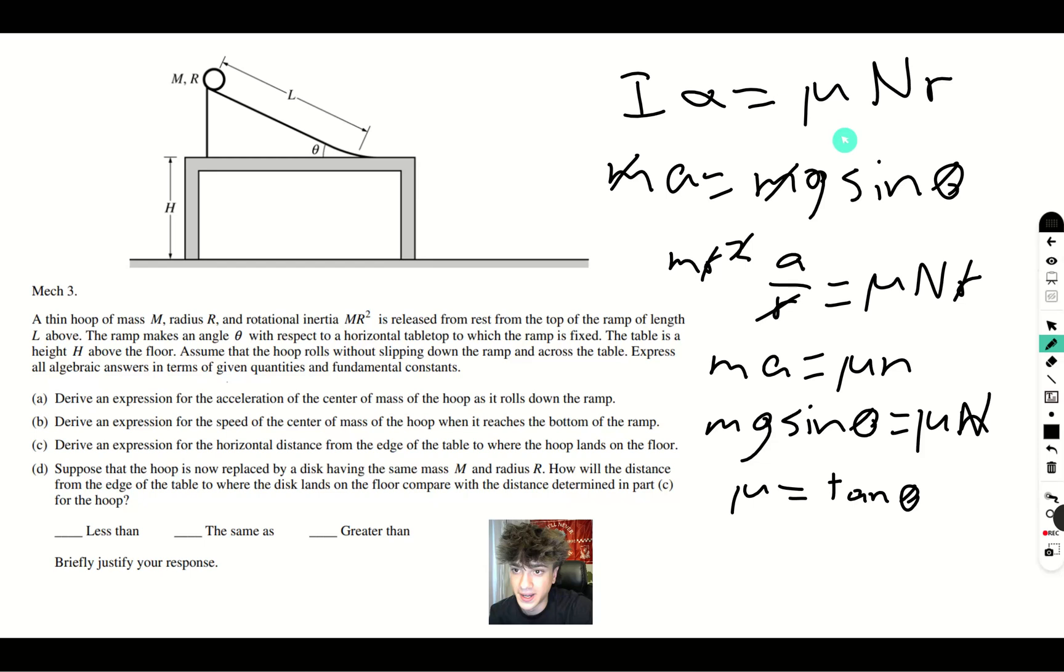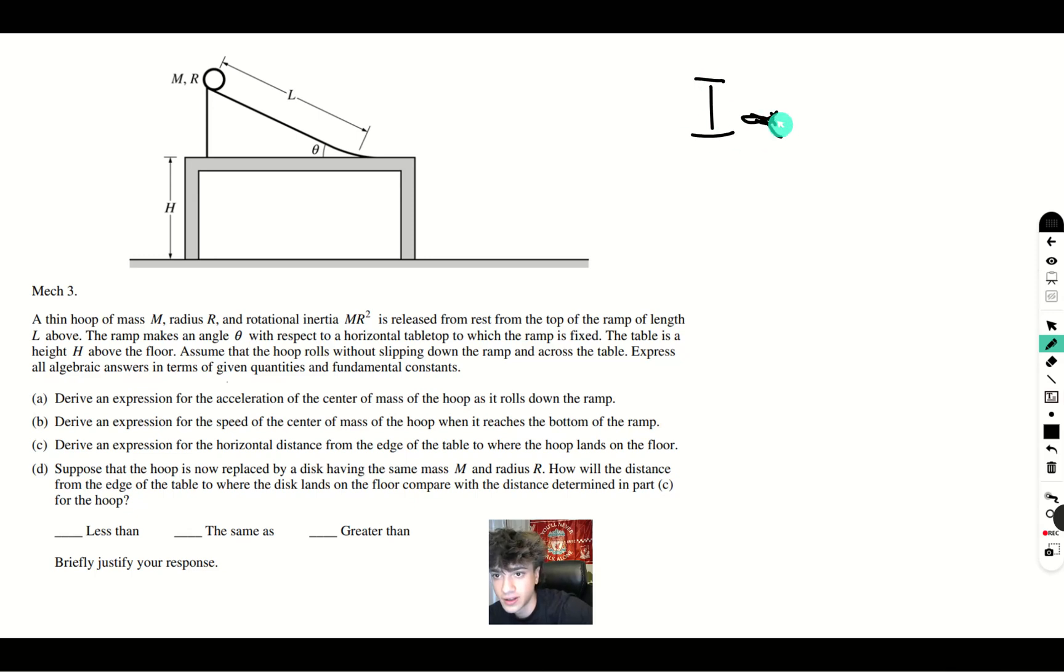So from here we can just go back to this, knowing that our mu is tan theta. We've got tan theta times normal force R is equal to M R squared A over R. All these R's are cancelled.